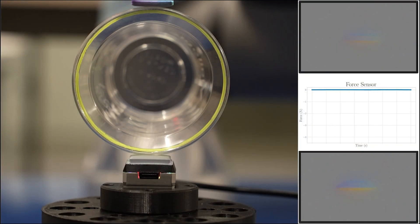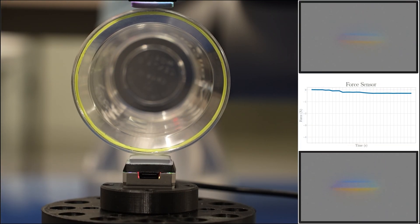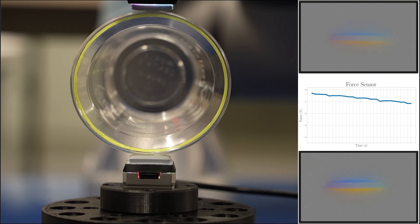In the controlled deformation experiment, we found a mapping relating force applied to a plastic cup rim and the resulting deformation using a force sensor.